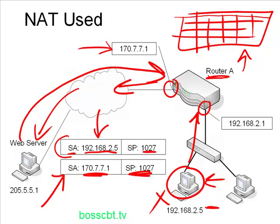My PC gets the packets and thinks they came straight from the web server, but the router did some translation in the meantime. The web server thinks the packets came straight from my PC, but the router is also changing them around. That's NAT — the actual translation applied to the private IP to make it look like it's coming from a public IP, allowing devices to talk over the internet even though the PC has a private IP address.